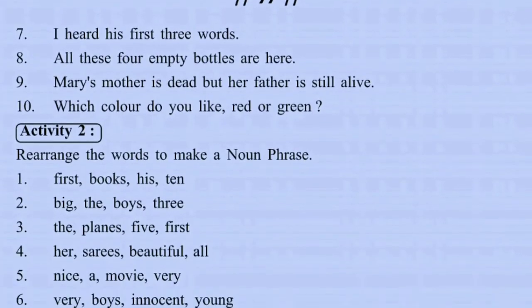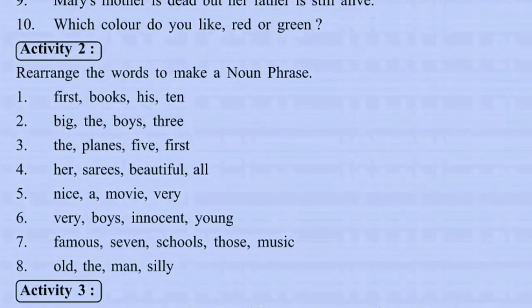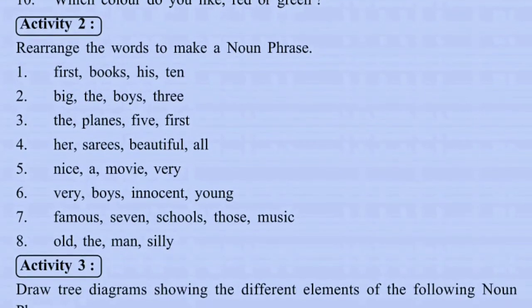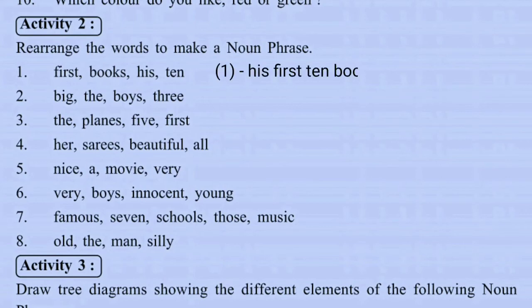Activity Two: Rearrange the words to make a noun phrase, putting the words in the right order. For the words 'first', 'his', 'ten', 'books' — 'books' is the head noun. The correct noun phrase is: his first ten books.